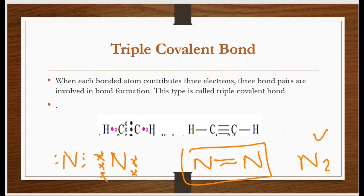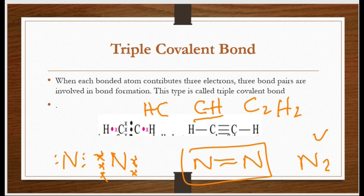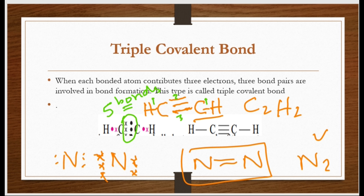Paper mein yeh bhi poocha gaya hai: C2H2 ke darmiyan kaun sa covalent bond hai — single, double, ya triple? C2H2 mein do carbon aur do hydrogen hain, matlab har carbon ke saath ek hydrogen lag gaya. Ab carbon ki ek valency occupied ho gayi, baaki 3 rehti hai, to wo 3 bonds bana lega — triple covalent bond. Isme kitne covalent bonds hain? Ek hydrogen aur carbon ke darmiyan, aur 3 carbon-carbon ke darmiyan — total 5 bonds present hain. Yeh bhi poocha gaya hai: kitne electrons triple covalent bond formation mein hissa lete hain? Hum kahenge 6 — ek bond 2 electrons se banta hai, yahan 3 bonds hain, 2 × 3 = 6 electrons participate karte hain triple covalent bond formation mein.